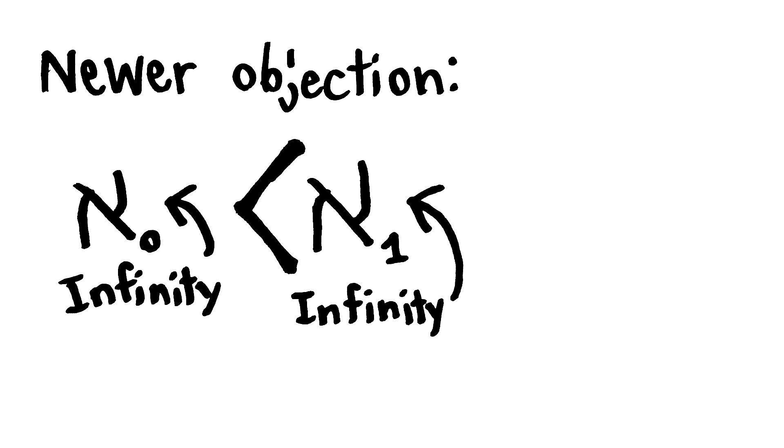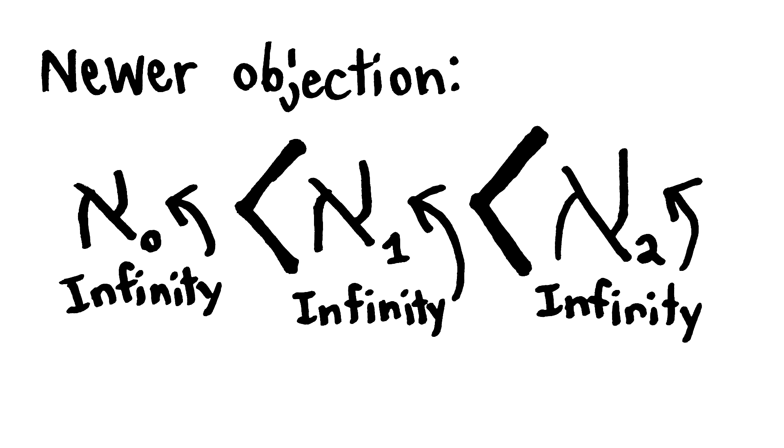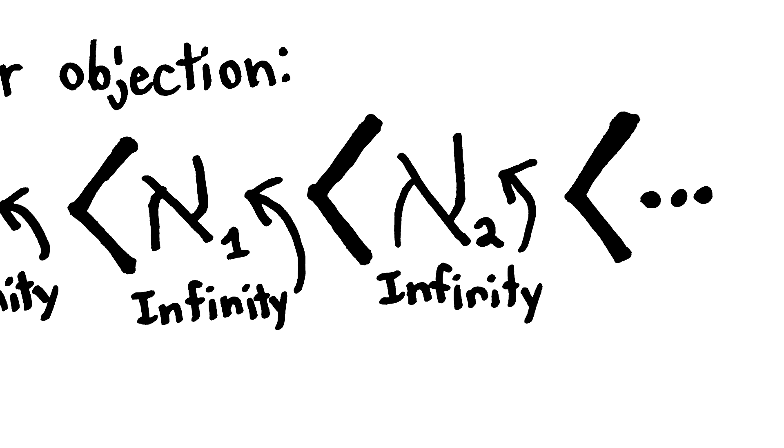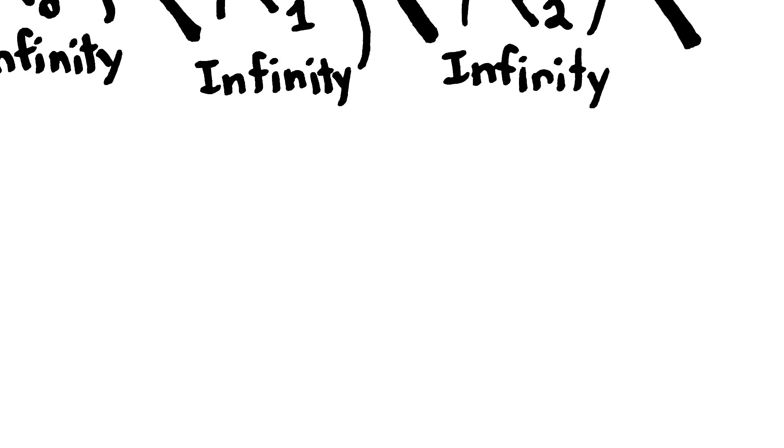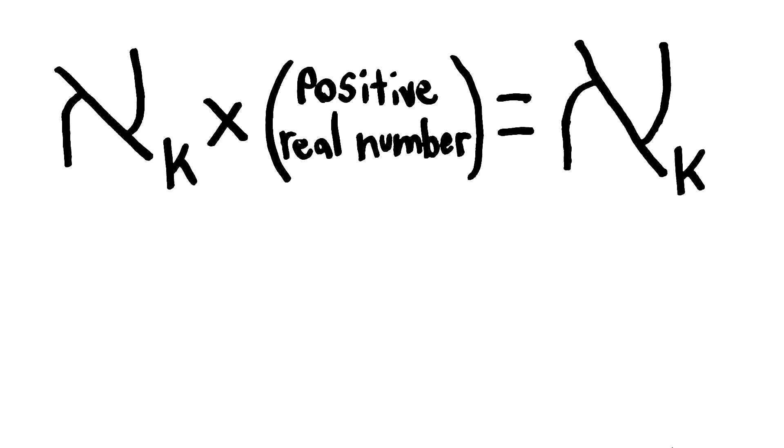Now, a newer objection is that set theory shows us that there are different sizes of infinity. Different infinities are written out like this. We have the Hebrew letter Aleph, and then a subscript. Aleph 0 is the smallest infinity, Aleph 1 is the next biggest, Aleph 2 is the next biggest, and so on. Each of these Aleph numbers, these different sized infinities, has that absorption property I mentioned earlier. And that's what's important for this objection.